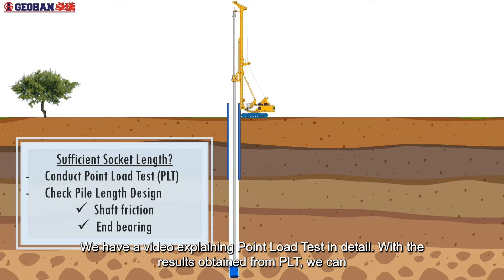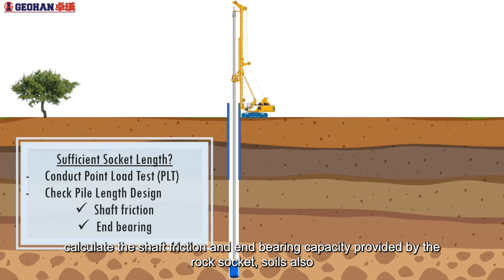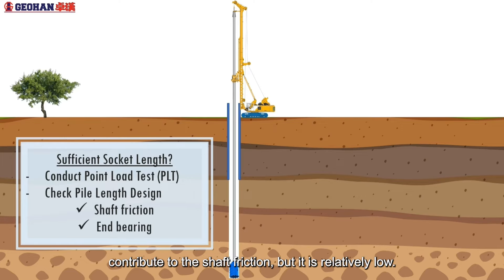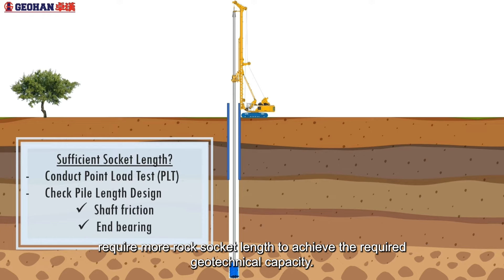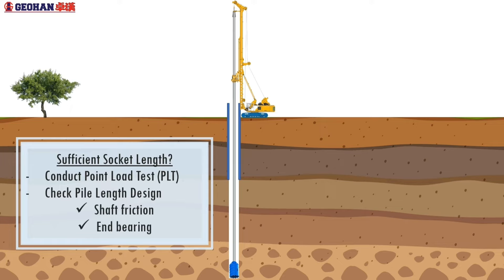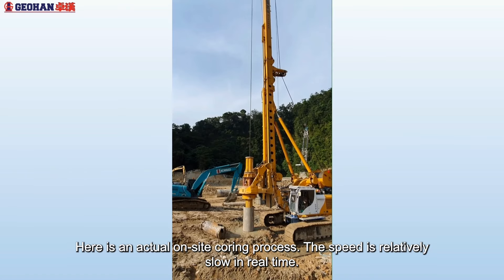We have a video explaining point load test in detail. With the results obtained from PLT, we can calculate the shaft friction and end bearing capacity provided by the rock socket. Soils also contribute to the shaft friction but it is relatively low. For instance, rock samples with lower PLT index indicate lower quality rocks and we will require more rock socket length to achieve the required geotechnical capacity. Here is the actual on-site coring process. The speed is relatively slow in real time.